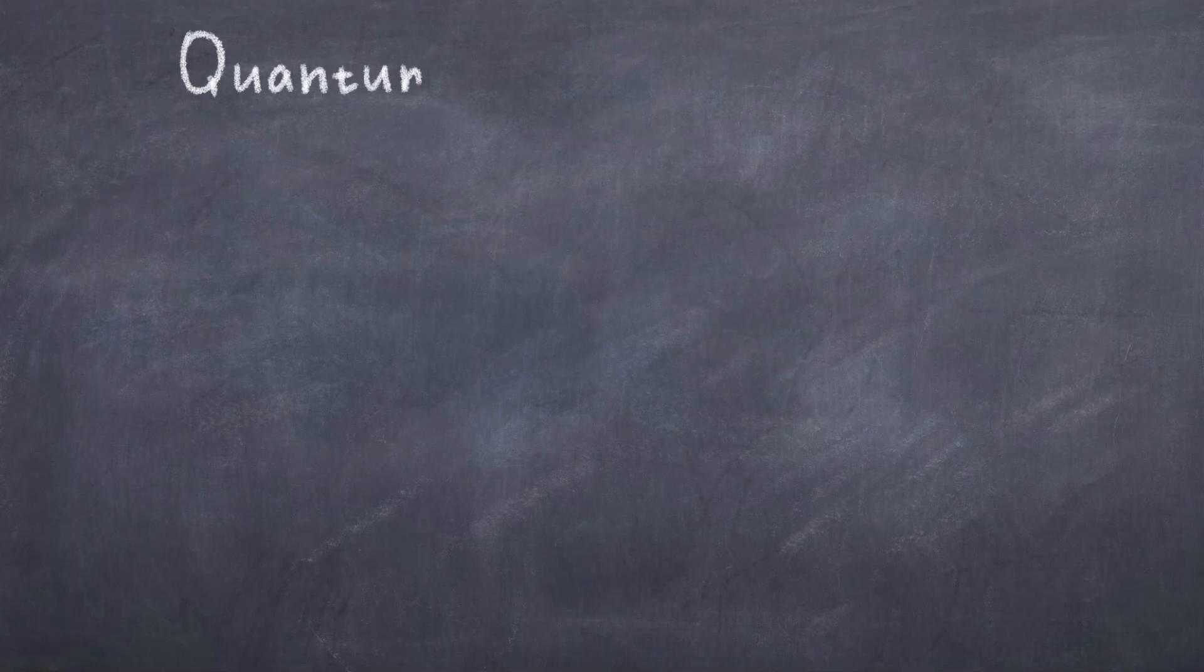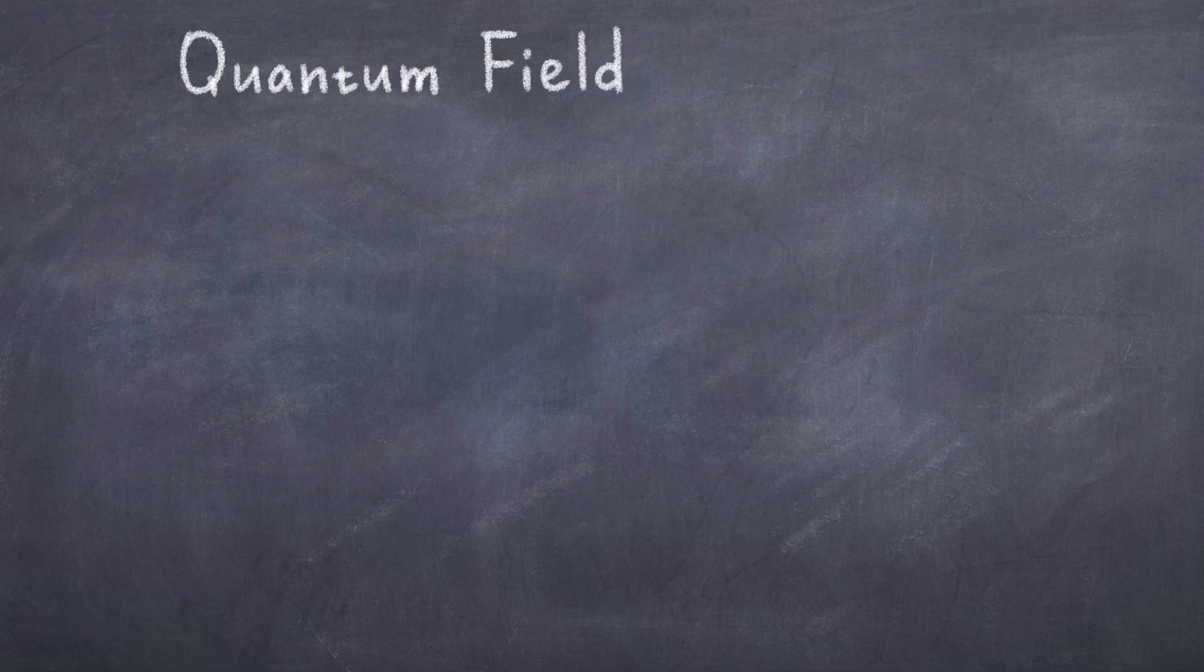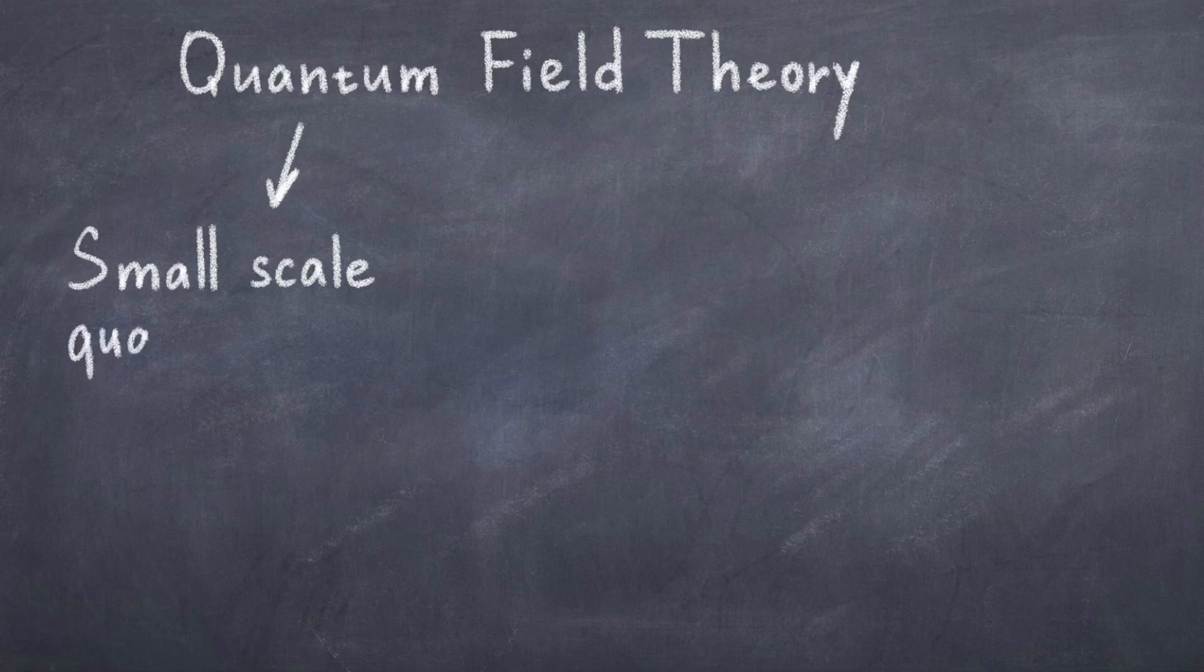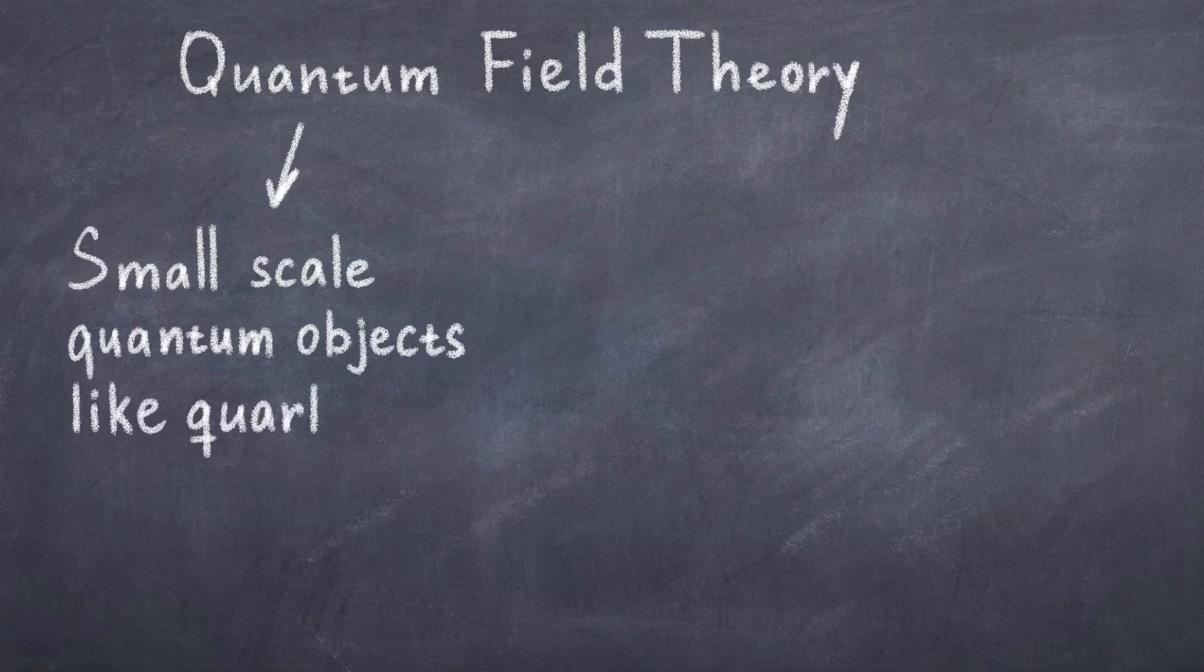The obvious thing to start with is the name of the subject at hand, quantum field theory. It is clear that quantum refers to the fact that we are interested in quantum objects like electrons and quarks, a bit like in quantum mechanics. We are thus interested in describing the smaller scales in the universe, meaning at distances smaller than a nanometer. Quantum also means that we use operators just like in quantum mechanics.